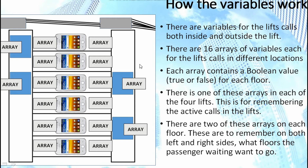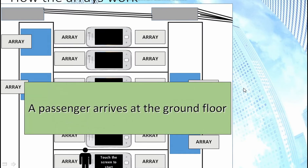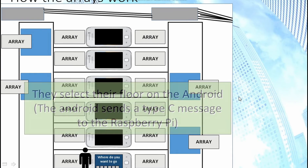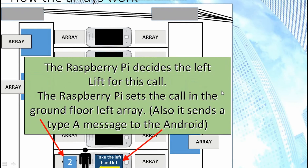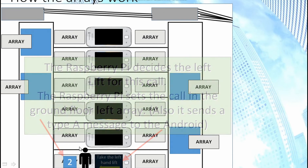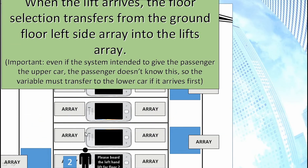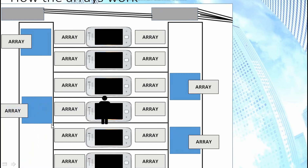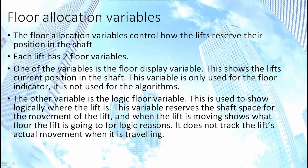Now on to how the variables work. There are variables for lift calls inside and outside of the lift. Each set of variables is done as an array; each position in an array on each floor is either true or false depending on whether there's a call. For example: a passenger arrives at the ground floor, chooses their floor, the Android sends a C message, the Raspberry Pi responds with an A message telling the passenger to take the left hand lift. In the ground floor left array, the second position becomes true, indicating a passenger is waiting on the left hand side. When the lift arrives, the call transfers into the left lower car's array. When the lift reaches the destination, that entry goes false and the passenger gets out.